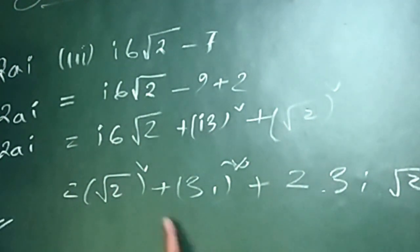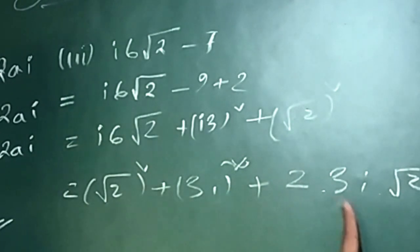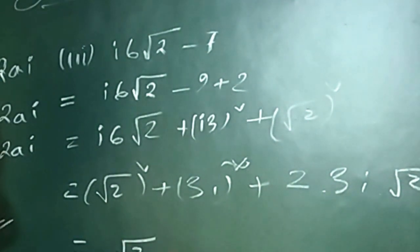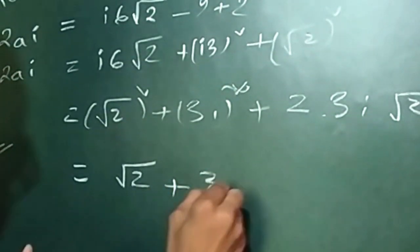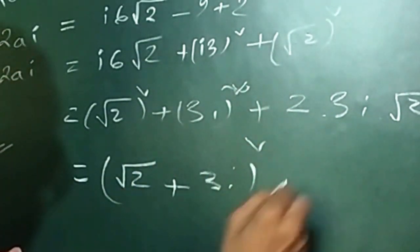The formula is A squared plus B squared plus twice A B. So the answer is 2 plus 3i.